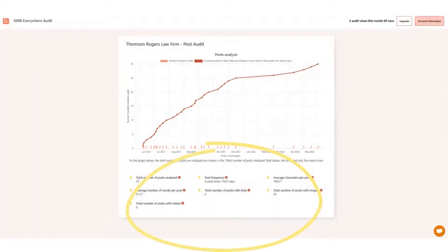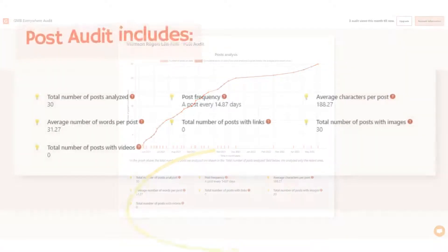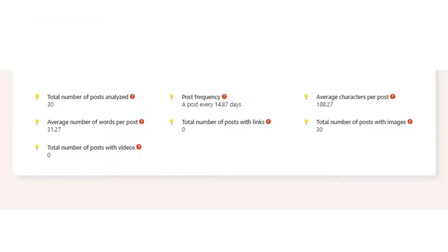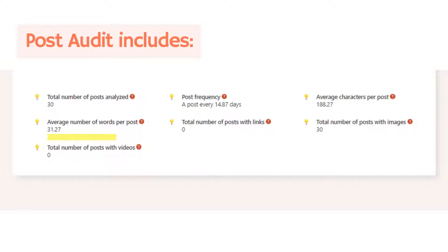Below the graph are the details of the analysis made by GMB Everywhere based on the latest 30 posts of the business profile you searched for. The analysis includes the average number of words per post, the total number of posts with videos, post frequency of the owner, total number of posts with links, average characters per post, and the total number of posts with images.